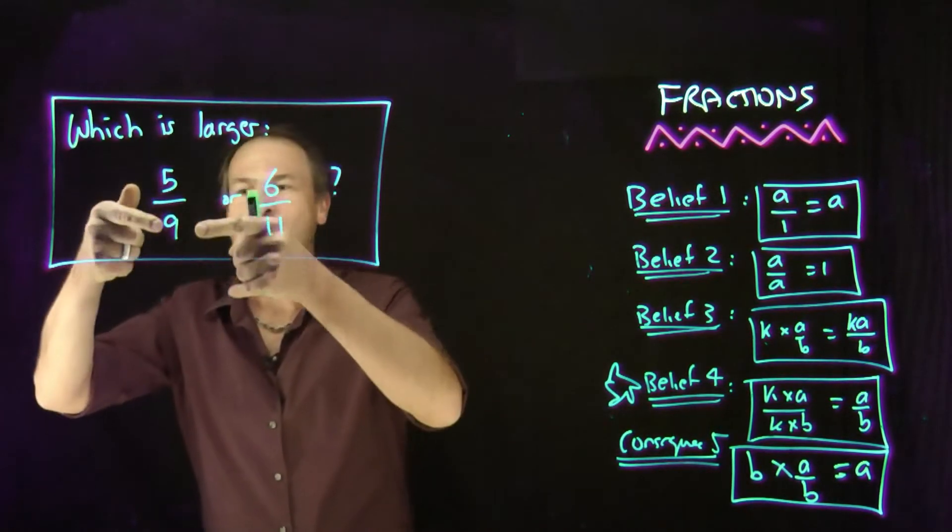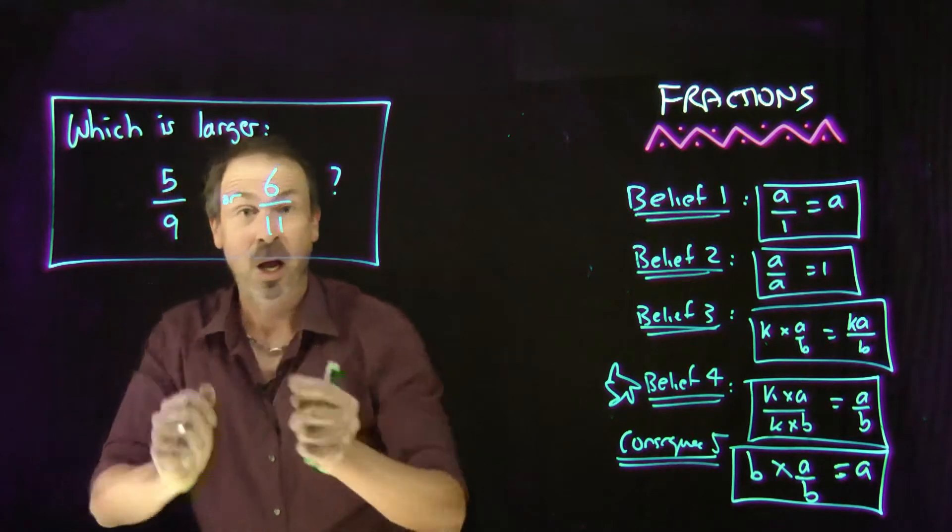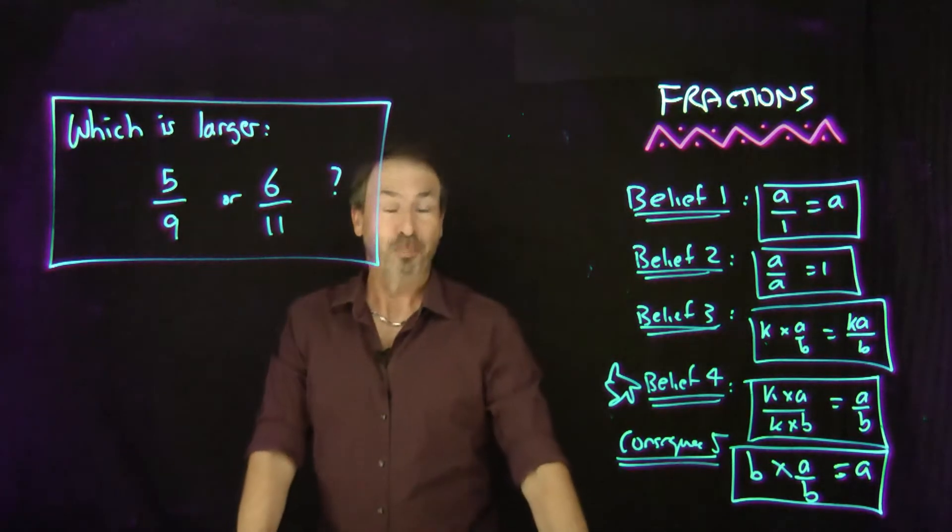I mean, if I share 5 pies equally amongst 9 students, yes, each of those students will get a fraction of pie, a portion of pie. Or if I share 6 pies amongst 11 students, those students will get a portion of pie. Which students get a larger portion each?